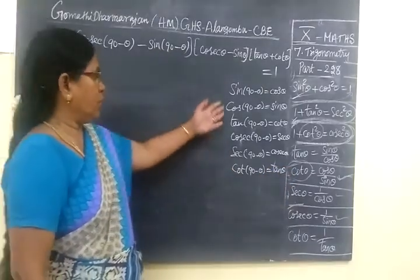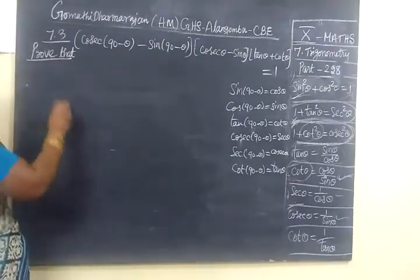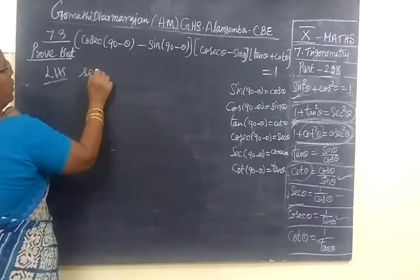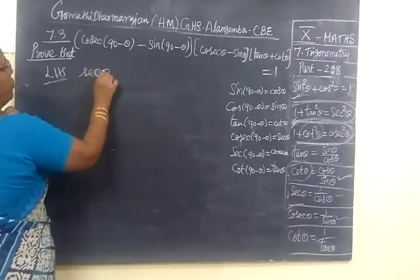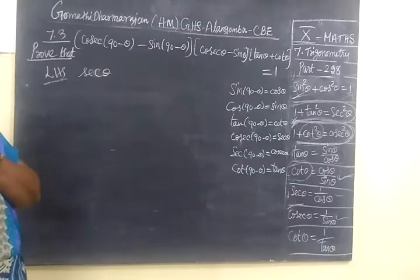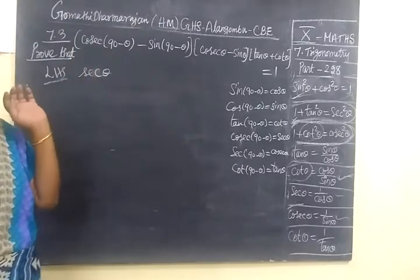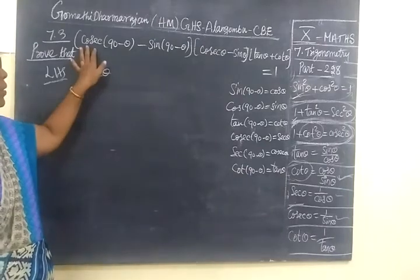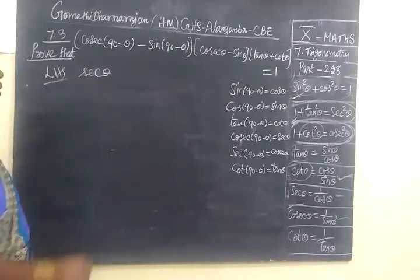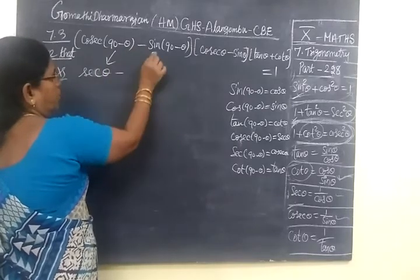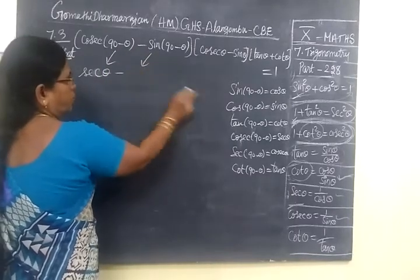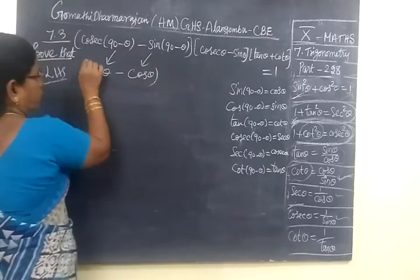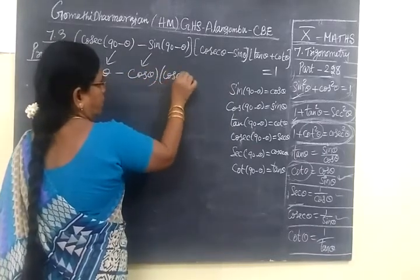So using this, we are writing LHS: cosine of 90 minus theta equal to sine theta — not sine theta directly. Some may think cosine of 90 minus theta equals sine theta, giving 1 by sine theta, then cosine theta. Cosecant of 90 minus theta equals sine theta. Minus sine of 90 minus theta — sine of 90 minus theta equals cosine theta.